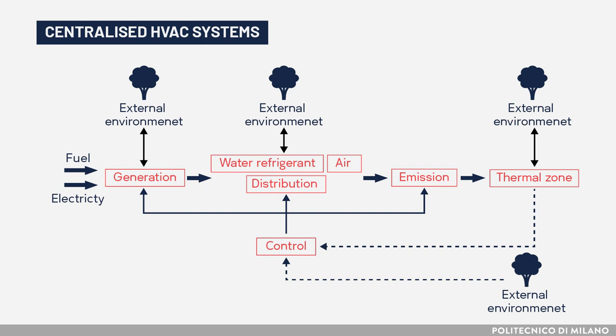Centralized systems serve an apartment or a whole building and are made by four subsystems related to their functions: heat or cold generation; control and regulation; heat, cold, and air distribution; and heat, cold, and air emission, which is delivery to the indoor ambient or rooms.